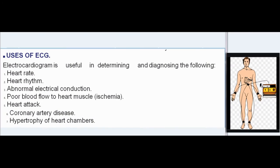Uses of ECG: Electrocardiogram is useful in determining and diagnosing heart rate, heart rhythm, abnormal electrical conduction, poor blood flow to heart muscle (ischemia), heart attack, coronary artery disease, and hypertrophy of heart chambers.